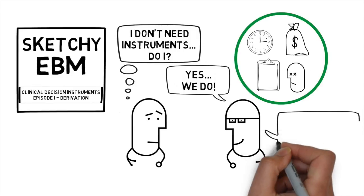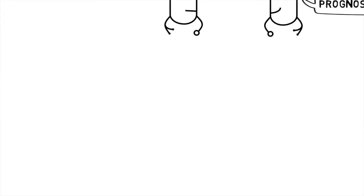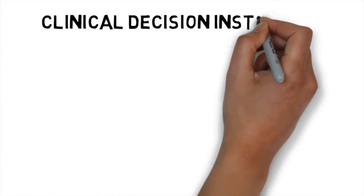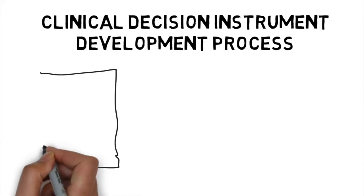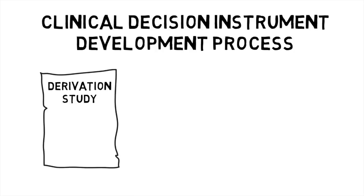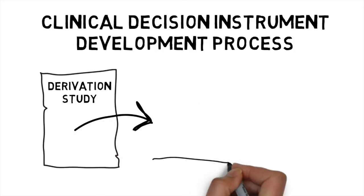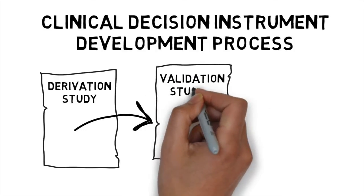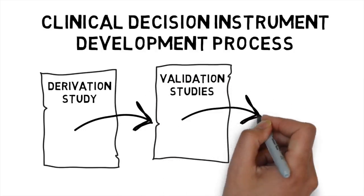Clinical decision instruments most often help us with either diagnosis or prognosis. How we actually come up with clinical decision instruments is really important. This developmental process follows three different phases: the first study is always a derivation study, which should be followed by one or more validation studies, and finally there should be an impact analysis done. In this episode, we're going to talk specifically about the derivation study.